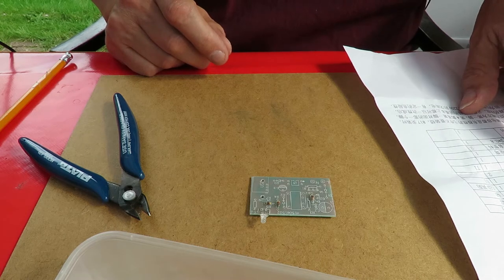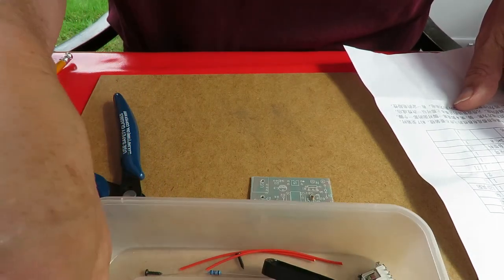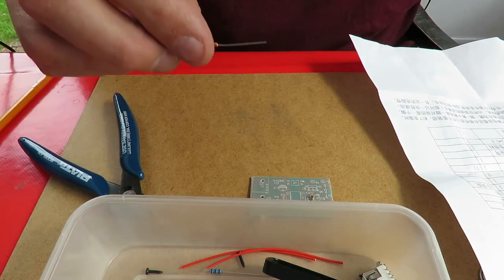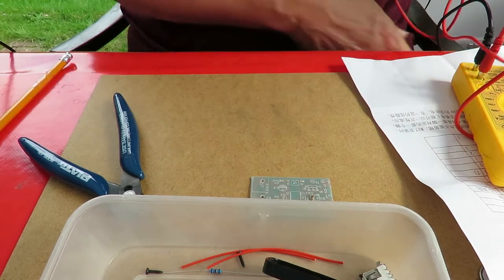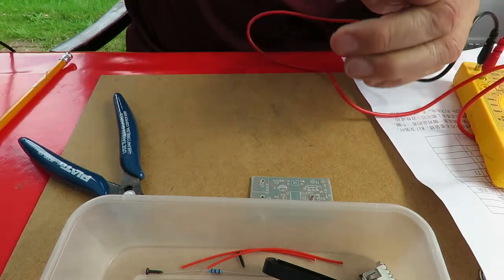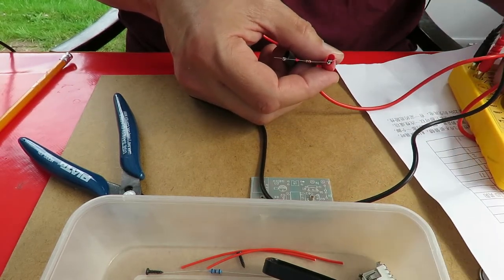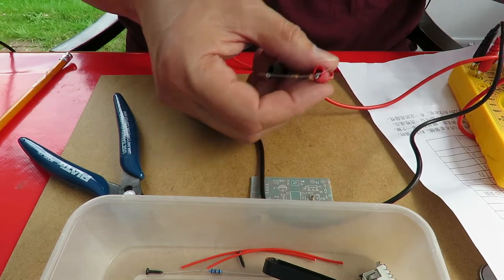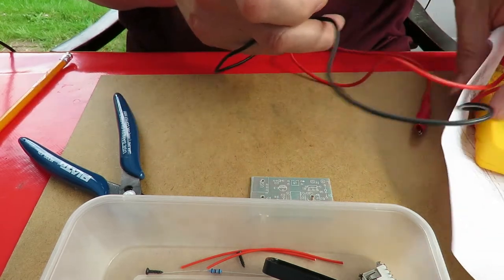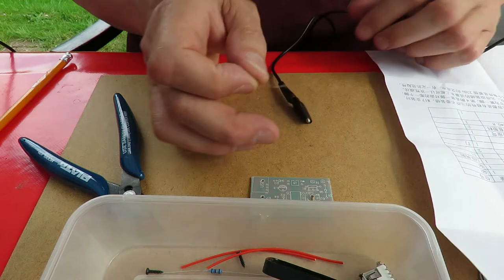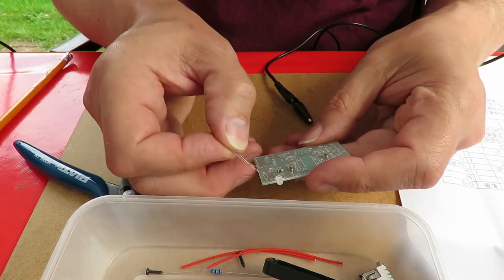All right, what I really ought to be doing is ticking the pieces off if I've done them. R6, 330. I seem to remember orange is 3. Yep, orange, orange, brown. R6, that one.